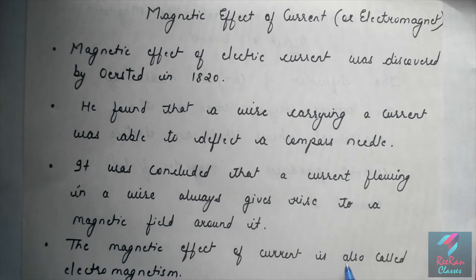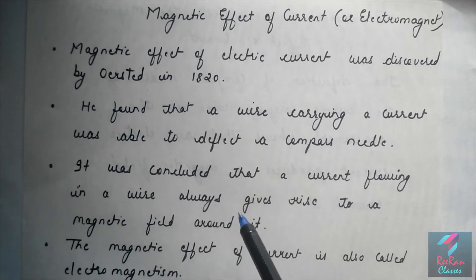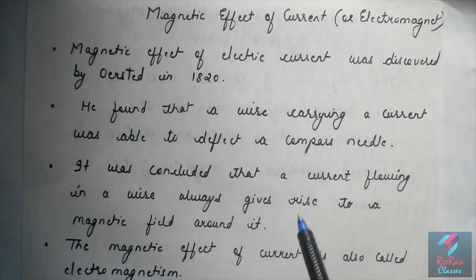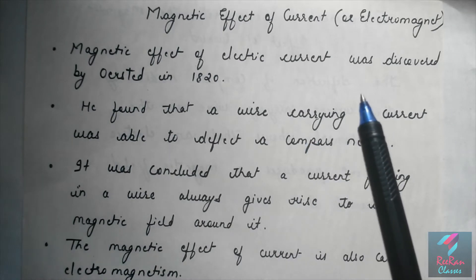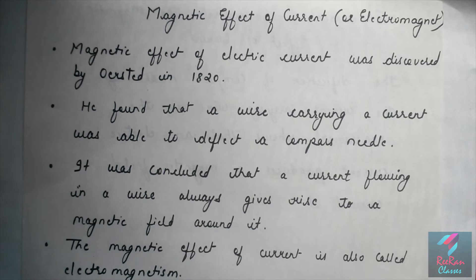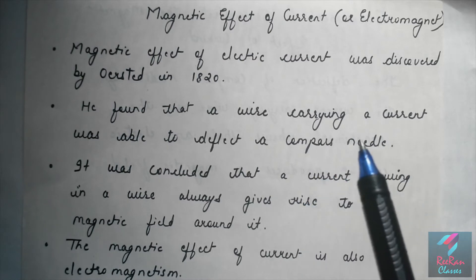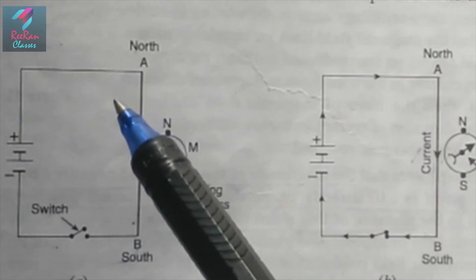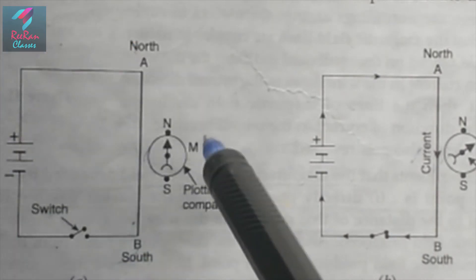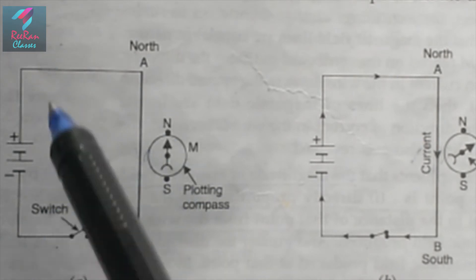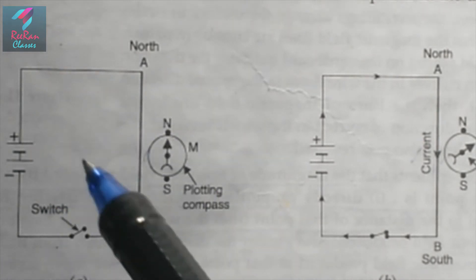The magnetic effect of current is called electromagnetism. This means that electricity produces magnetism. From this experiment we came to know that. Now we will describe the Orsted experiment to show that a current carrying wire produces a magnetic field around it.